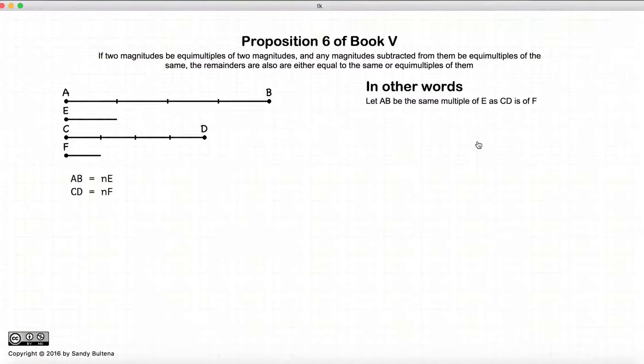Now, in this proposition, we start off with two lines, AB and CD, which are equal multiples of E and F respectively. We take a subset of each line, AG and CH,